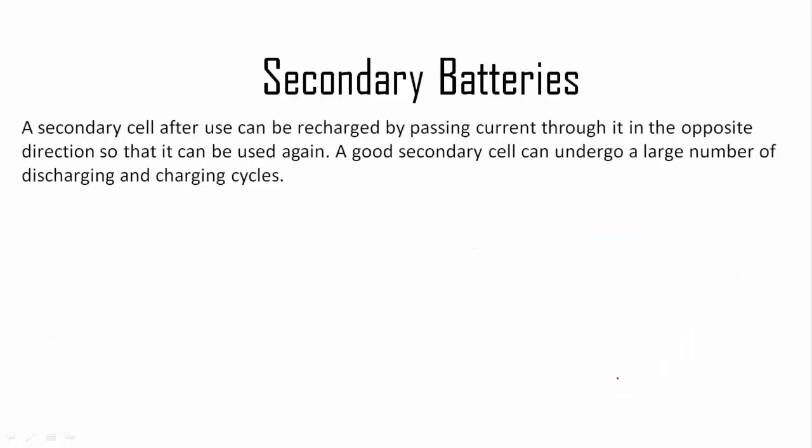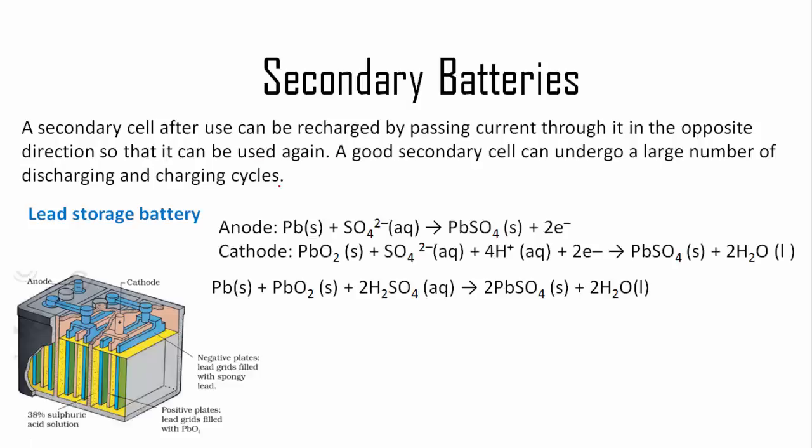Secondary batteries are those which can be recharged after use. These are rechargeable batteries. A secondary cell after use can be recharged by passing current through it in the opposite direction so it can be used again. A good secondary cell can undergo a large number of discharging and charging cycles.